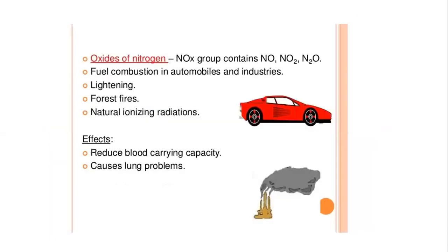Oxides of nitrogen include NO, NO2, and N2O. Sources include fuel combustion in automobiles and industry, lightning, forest fires, and natural ion radiation. Effects: they can reduce blood-carrying capacity and cause lung problems.